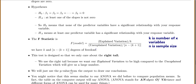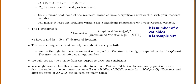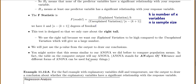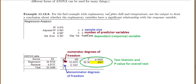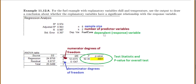You might notice we're talking about explained variation over unexplained variation — that might seem similar to ANOVA. ANOVA stands for Analysis of Variance, and in fact the table on our computer output will say ANOVA. There are many different forms of ANOVA used for many different things; it's just some way to analyze the variance. For our fuel example, we have x variables chill and temperature, and we want to use the output to draw a conclusion about whether the explanatory variables have a significant relationship with the response variable.